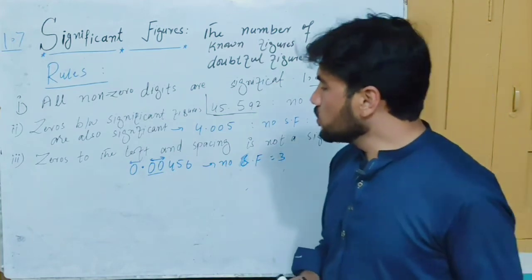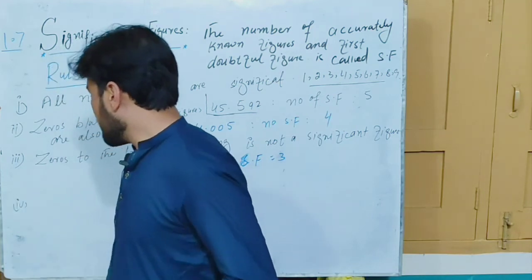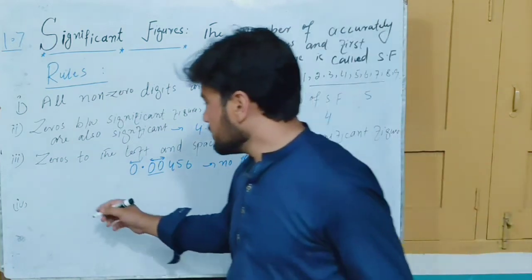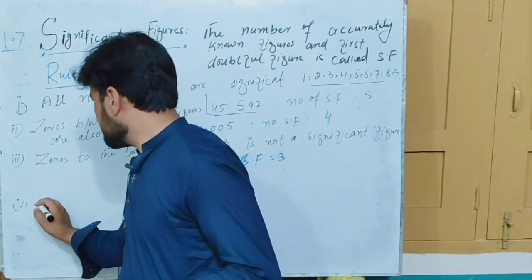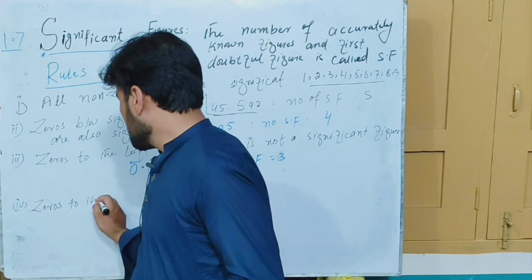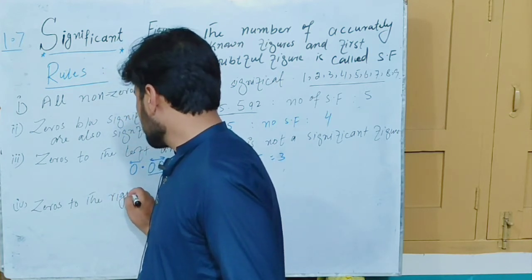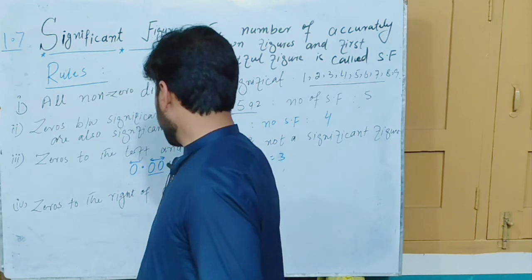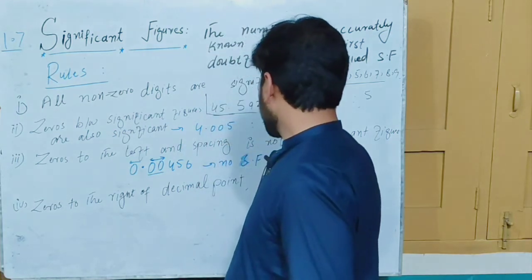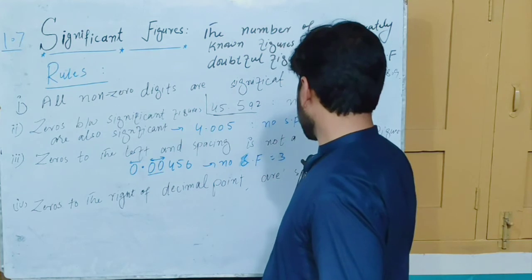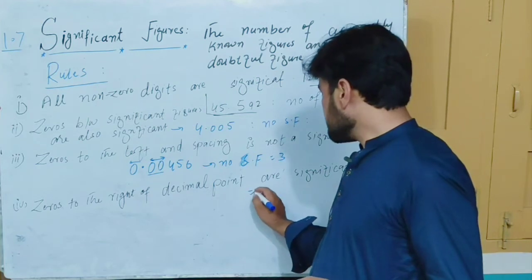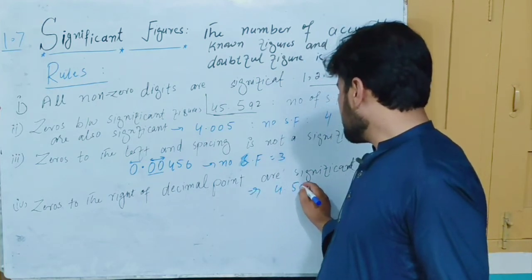Another rule concerns the decimal point: zeros to the right of the decimal point are significant figures. So if a number has zeros on the right side of a decimal point, those zeros count as significant figures. For example, a number like 3.00 has 3 significant figures.